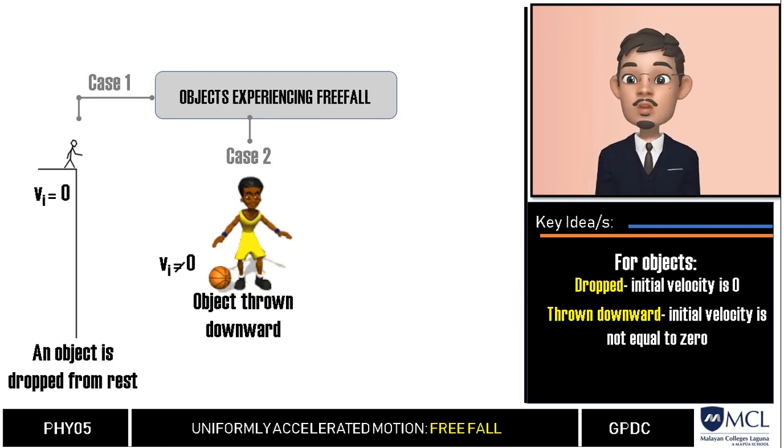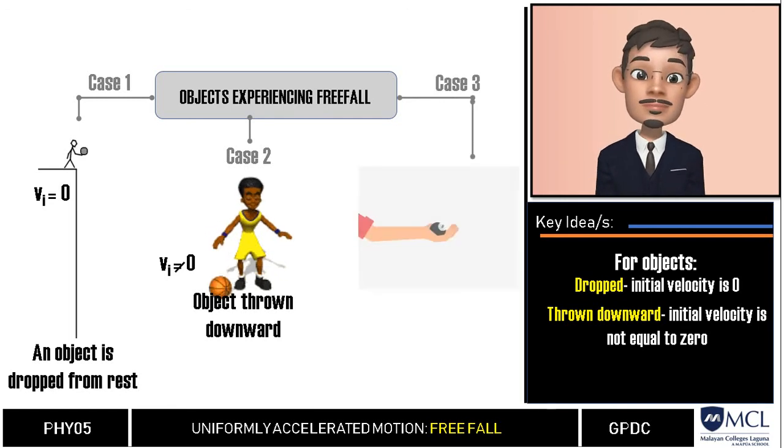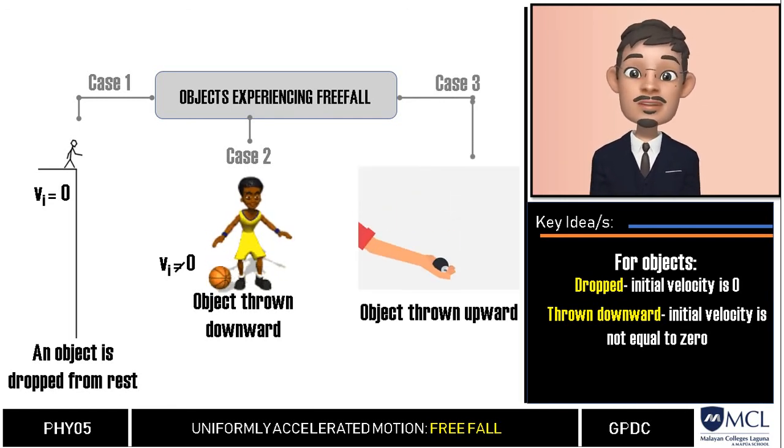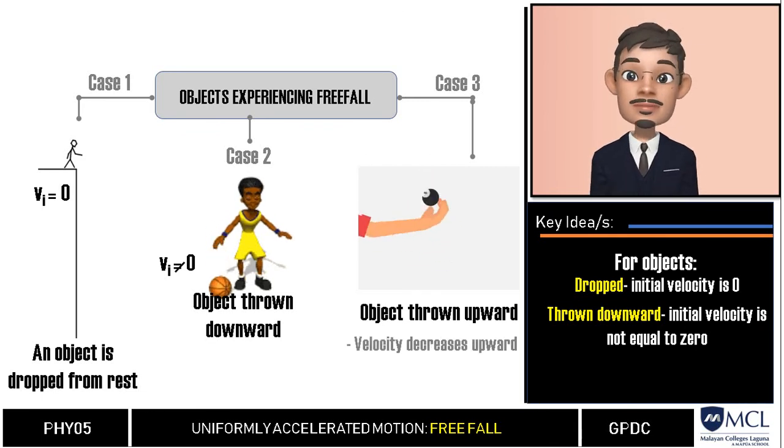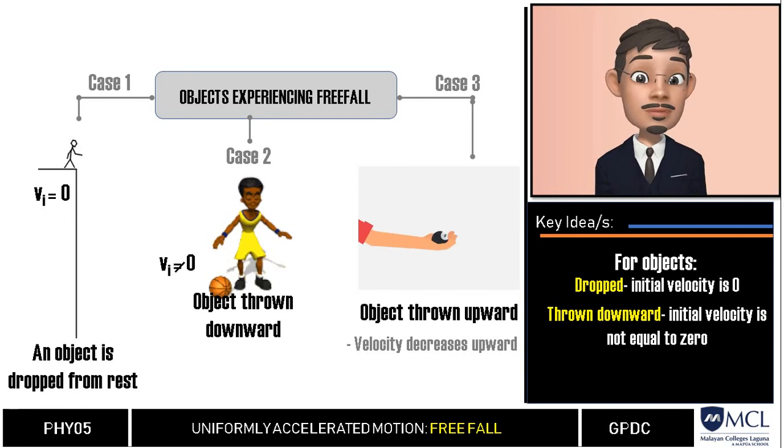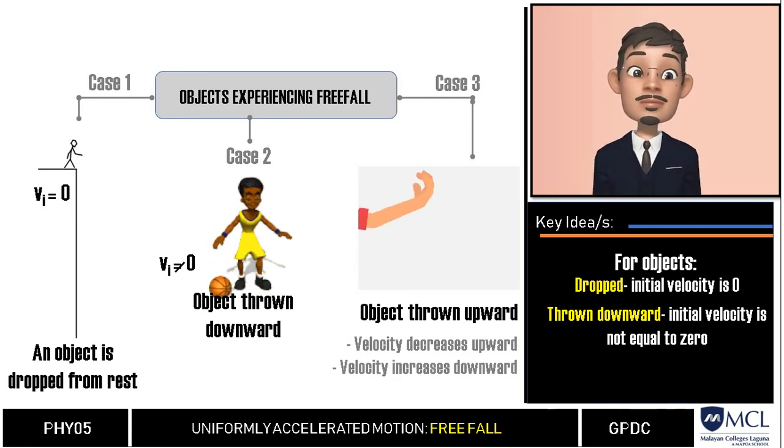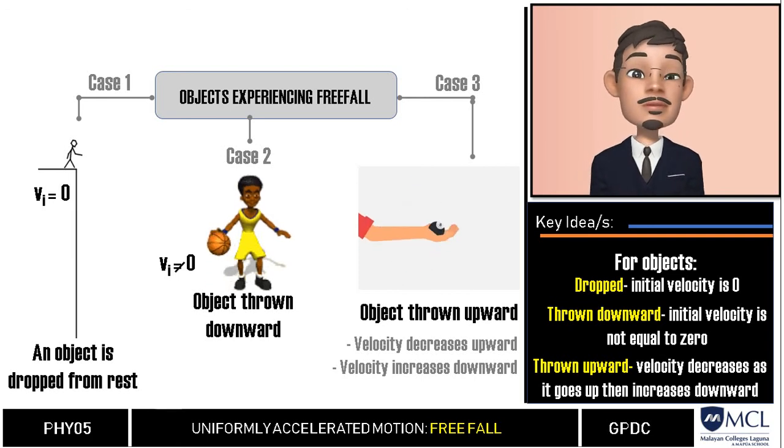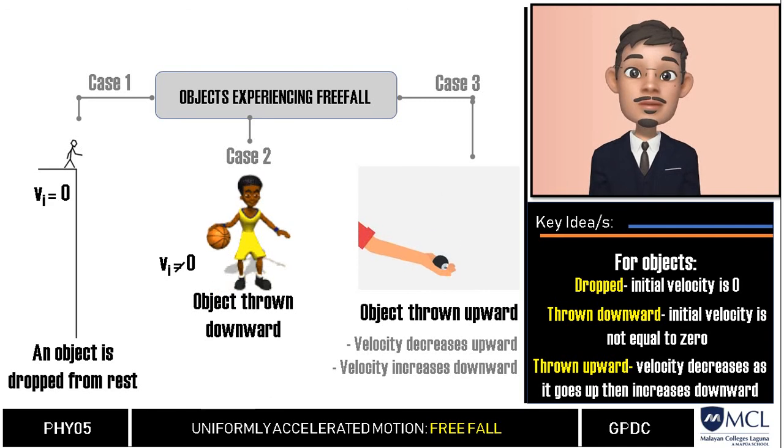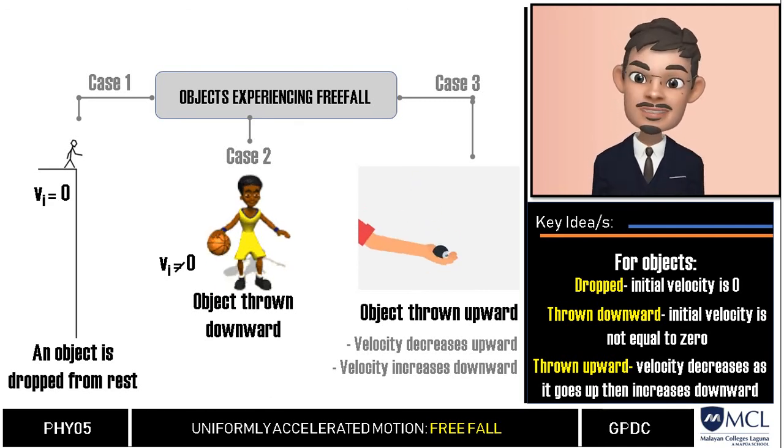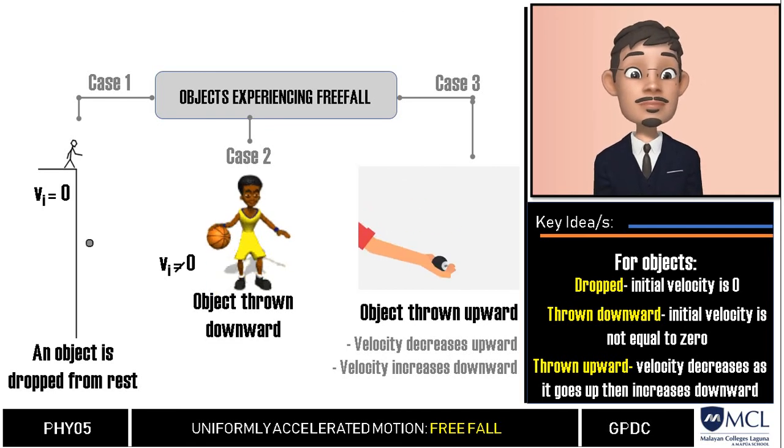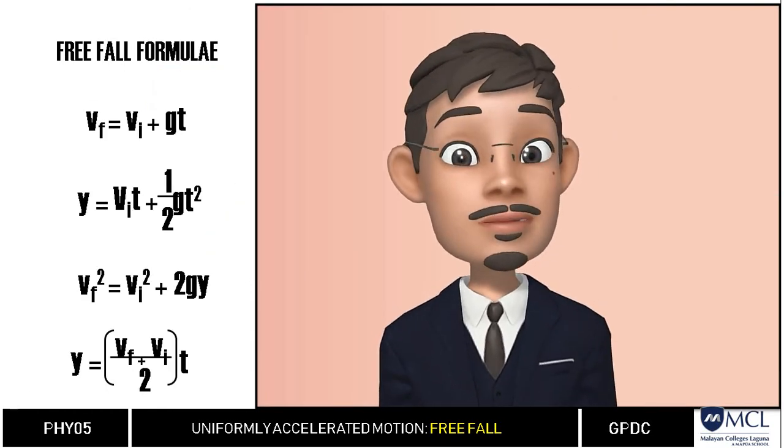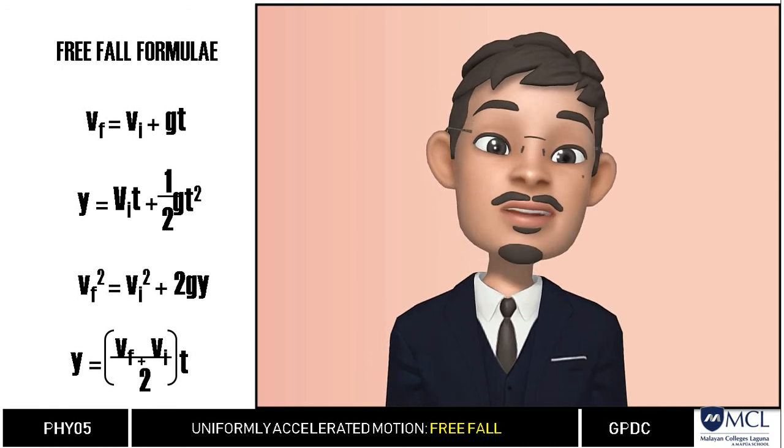Lastly, when an object is thrown upward, they still experience free fall. As an object moves upward its velocity decreases until it reaches the maximum height. At its maximum height the object will stop for a split second and starts to go down experiencing the same acceleration but this time with increasing velocity. The velocity of the object as it moves upward is in positive y direction while going down it is negative. At maximum height because it stops momentarily its velocity is equal to zero.